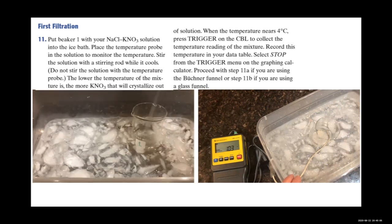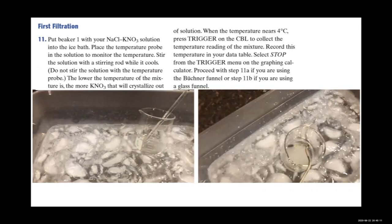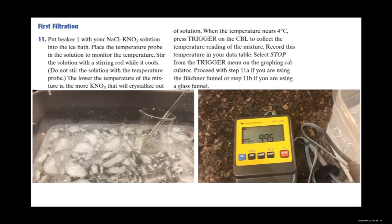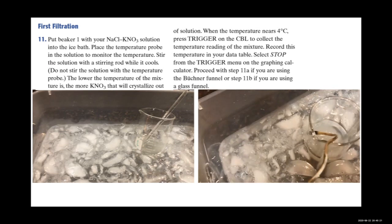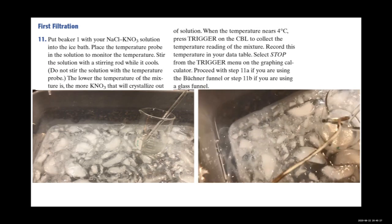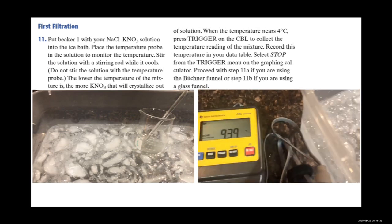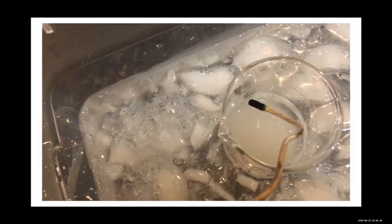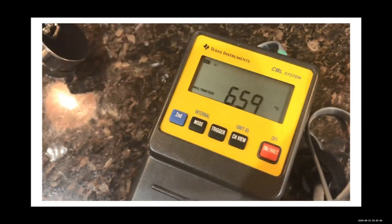Put beaker 1 with the NaCl–KNO3 solution in the ice bath. Place the temperature probe in the solution to monitor the temperature and stir with the stirring rod while it cools — swishing the beaker also helps. Be careful not to stir with the temperature probe. The lower the temperature of the mixture, the more KNO3 will crystallize out of solution. When the temperature nears 4°C, collect the temperature reading.